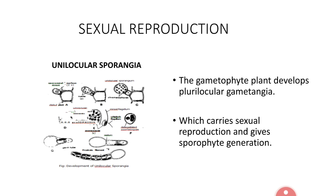During fertilization, two gametes from two plants come together and fuse with one another, forming a diploid structure called a zygote. In Ectocarpus, we can see three types of sexual reproduction patterns: one is isogamy, the second is physiological anisogamy, and the third is anisogamy.